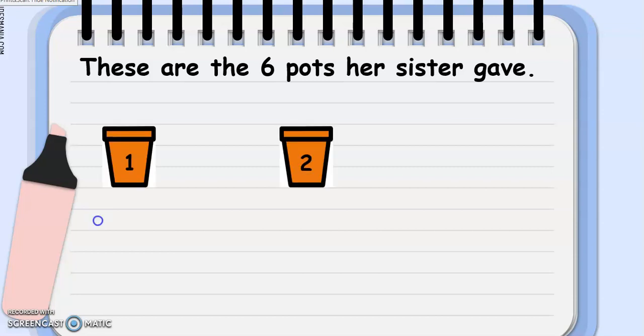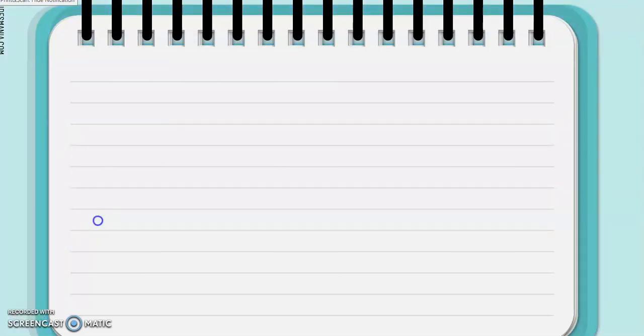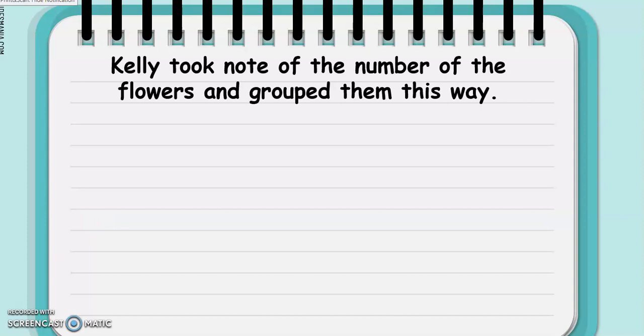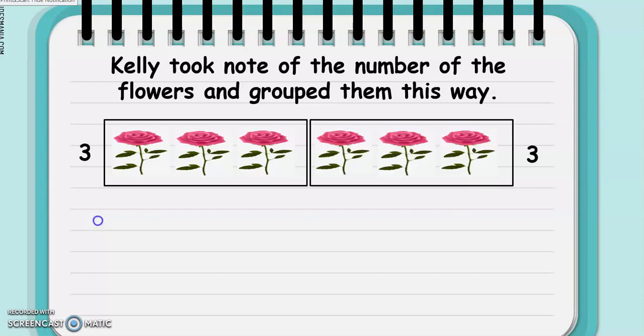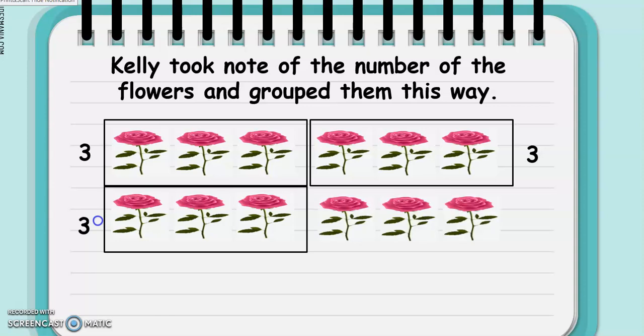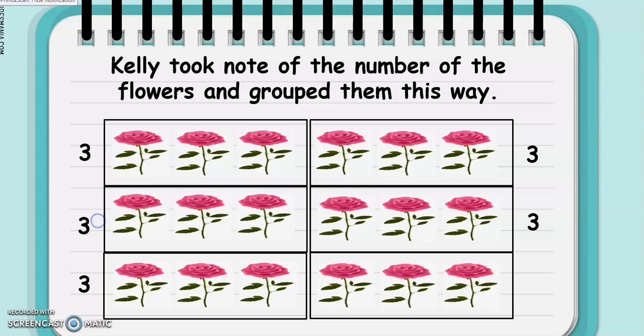One, two, three, four, five, six. Kelly took note of the number of the flowers and grouped them this way. So, she grouped three flowers first. Then another three, another three, another three, another three, and another three. There you go. We still have the 18 flowers, but they are already grouped into six groups with three flowers in each group.